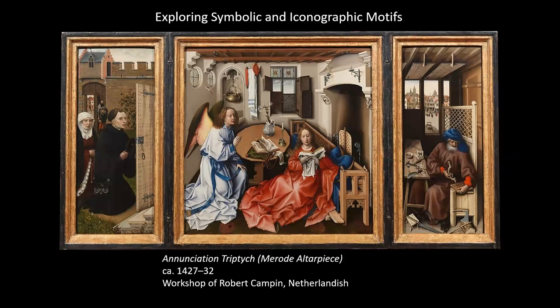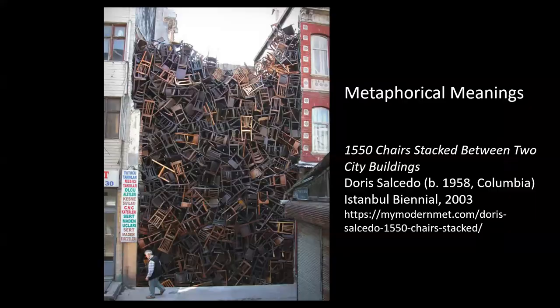In a painting like this — the Annunciation from the New Testament — we have various symbols, like a candle flame being snuffed out in the middle, and possibly a dove or bird in the background. There are all sorts of images and symbols, but they don't necessarily carry the same meaning over time. You would have to know particular aspects of this story in order to understand what's going on.